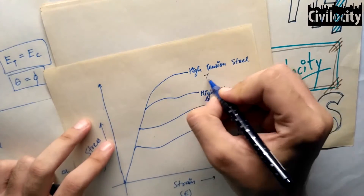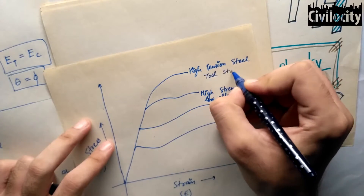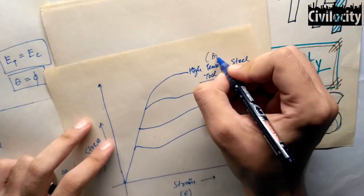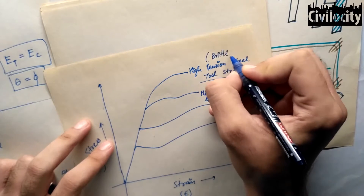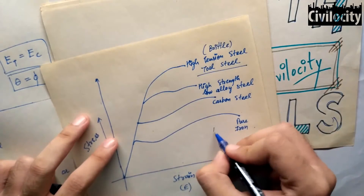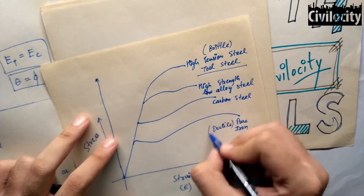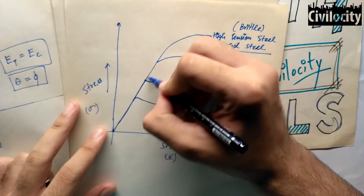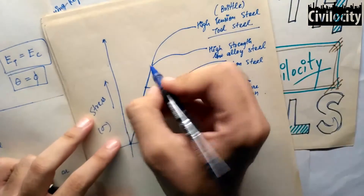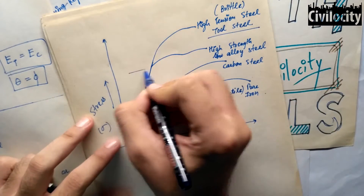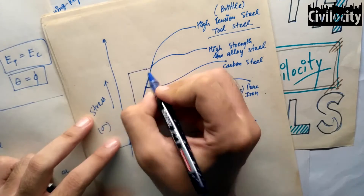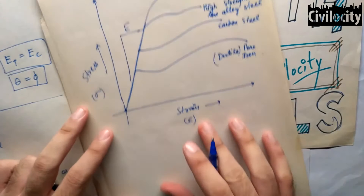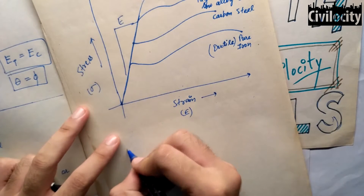Quenched and tempered alloy steel can also be known as tool steel or high tension steel. Among all the steel grades, high tension steel is more brittle and mild steel is more ductile. From the figure, you can see that all four grades of steel follow the same linear path initially and therefore have the same modulus of elasticity. For these four different grades of steel, yield stress, ultimate stress, and fracture strain differ greatly.